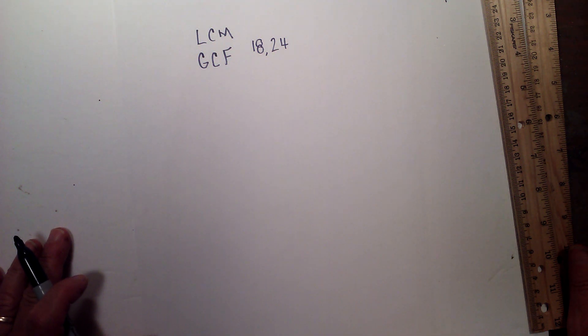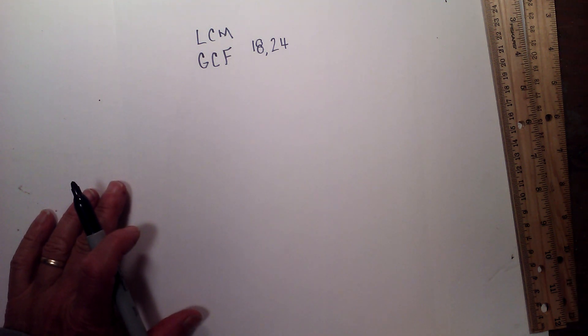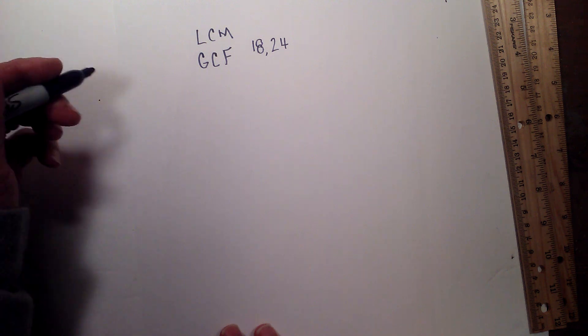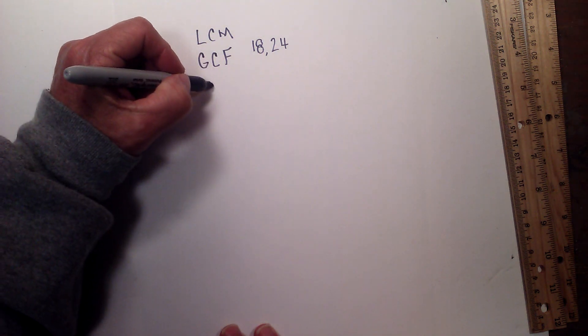In this video let's find the LCM, lowest common multiple, and the GCF, greatest common factor, of 18 and 24. I like to use a factor tree to find these two, so let's get started. Let's first create a factor tree for 18.